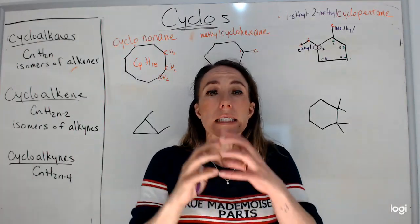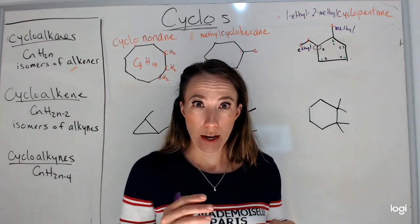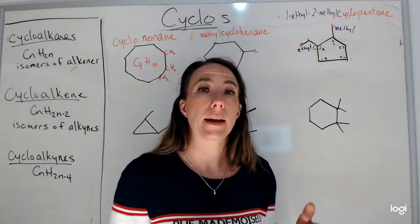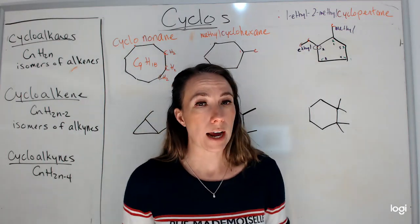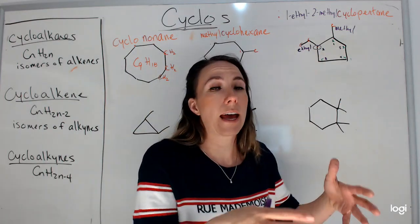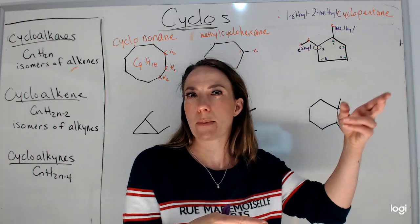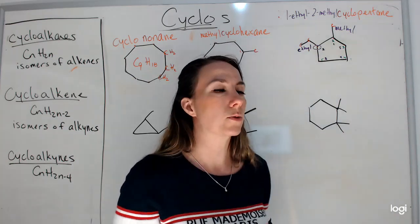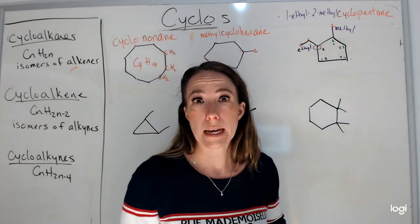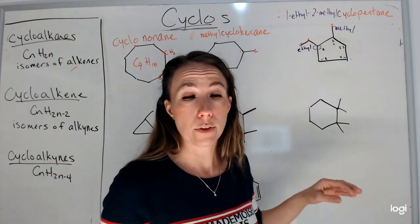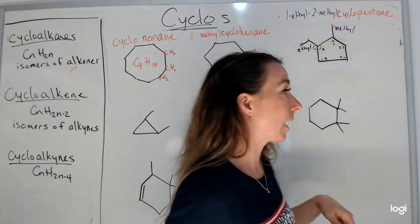This is very similar to straight-chain naming when we have a tie — it goes to the alphabetical order. That's a great thing about organic chemistry: it's front-heavy, and then we just tweak or add a rule as we go along. Really the only new thing you're learning here is the 'cyclo' in the name.